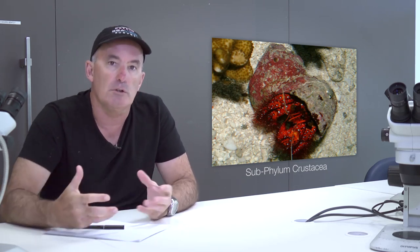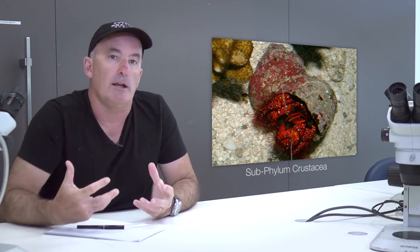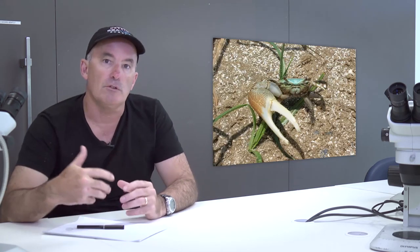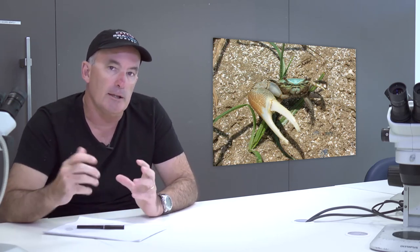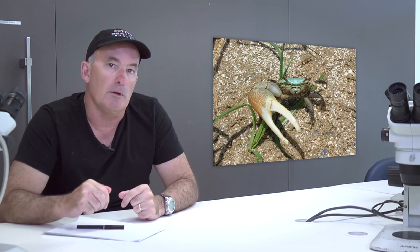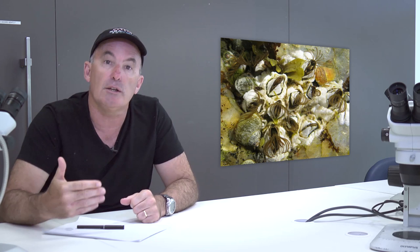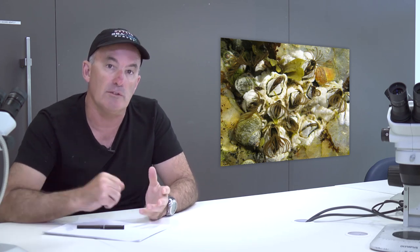Now the crustacea include easily recognizable organisms such as crabs, prawns, lobsters, barnacles, and sandhoppers. Like the other major groups of protostome invertebrates, crustacean species number in the thousands and are involved in a large number of interactions with other organisms.